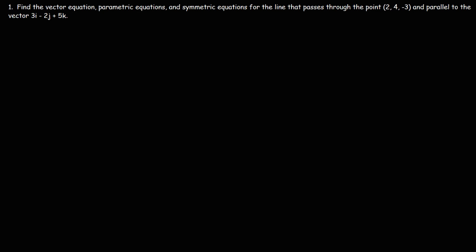In this video, we're going to talk about how to find the vector equation, parametric equations, and symmetric equations of a line if we're given a point on a line and a vector parallel to the line. In another problem, we're going to talk about how to do the same thing if we're given two points on a line. So let's go over the basics behind this.